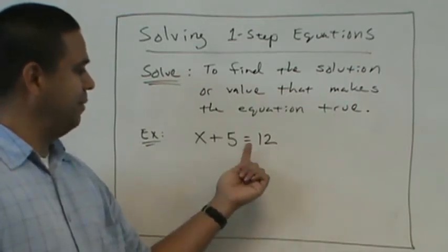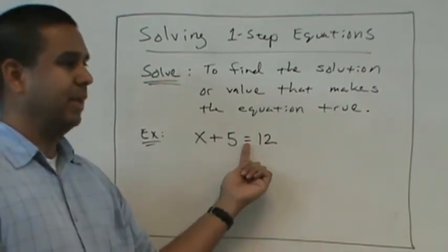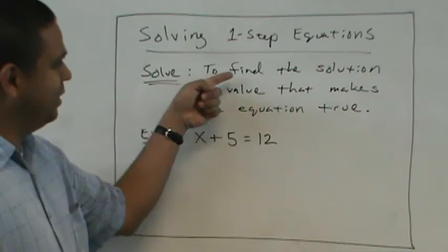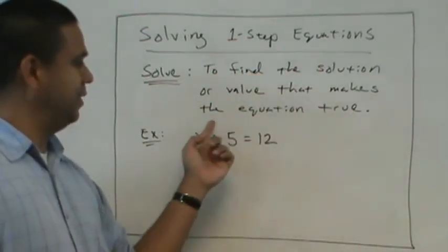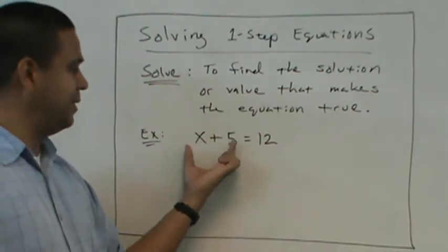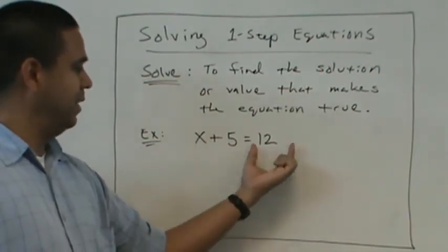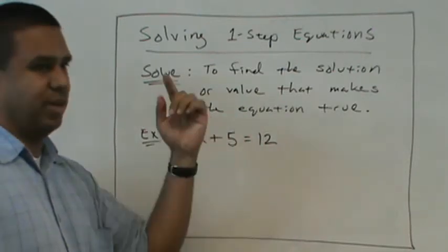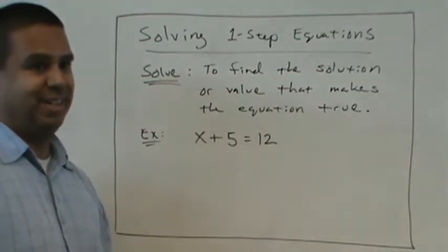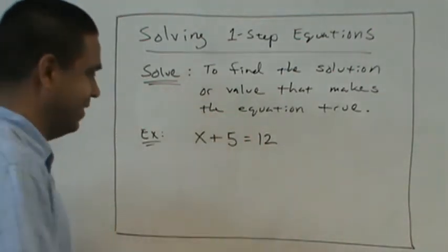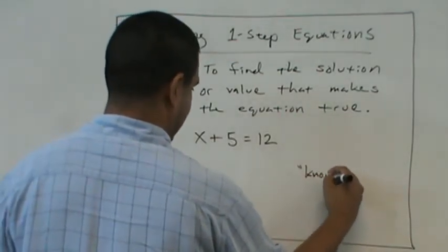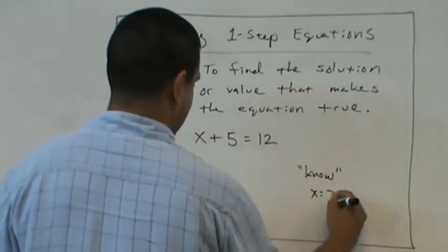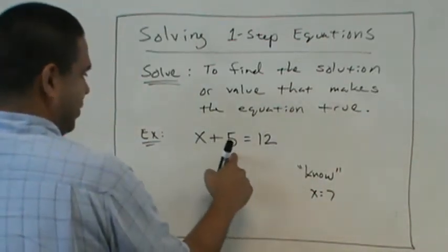So we're going to solve this equation. So what does solve mean? We want to find the solution or the value that makes this equation true. So that means left side equals right side. So a number plus 5 is 12. What number? 7, right? So we already just kind of know that x is 7. Why? Because 7 plus 5 is 12.